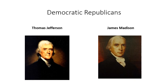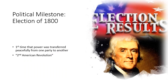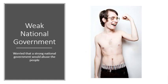Some of the prominent leaders of the Democratic-Republicans were Thomas Jefferson and James Madison. The election of 1800 was a huge political milestone — Thomas Jefferson was elected President, replacing John Adams. This was the first time power was transferred peacefully from one party to another, sometimes referred to as the Second American Revolution, because having a peaceful transfer of power between opposing parties is a huge aspect of a functioning republic. The Democratic-Republicans worried about the Federalist idea of a really strong national government that would abuse power, as they saw with Jay's Treaty, the National Bank, and the undeclared war with France.